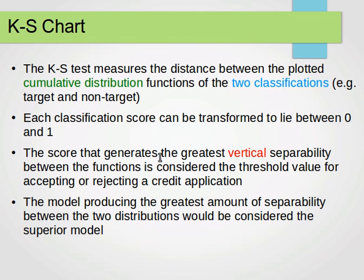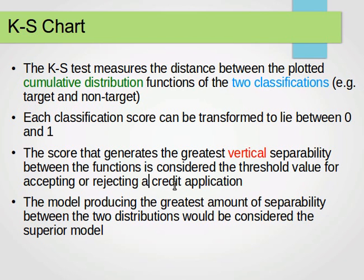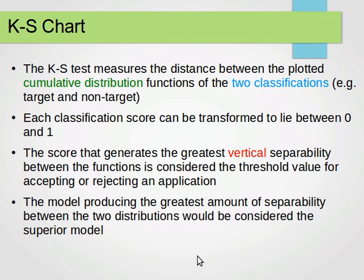The score that generates the greatest vertical separability between the cumulative distribution functions is considered the threshold value for accepting or rejecting an application — whether a credit application, university application, or anything like that. We plot the cumulative distributions of the two classifications, target and non-target, and find the score that produces the greatest vertical distance between them. The model producing the greatest separability between the two distributions would be considered the superior model.